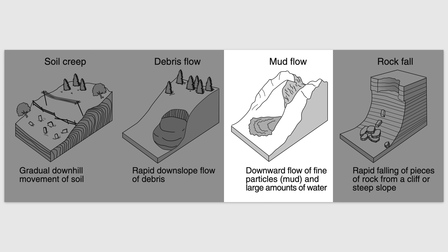Third, we have a mud flow, sometimes called a mudslide. This is the downward flow of fine particles — very small particles, which we refer to as mud — and water. Mud slides are often associated with big storms with a lot of rain and precipitation that makes the soil on a slope unstable until it eventually gives way and starts sliding downhill. They can be very dangerous.